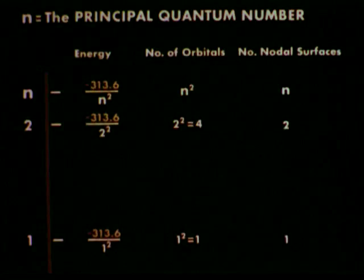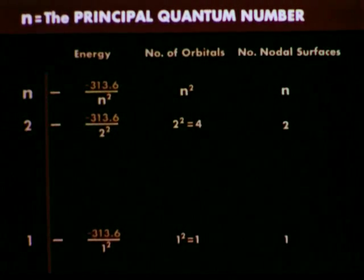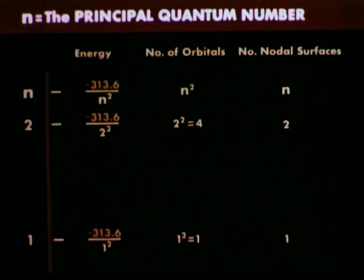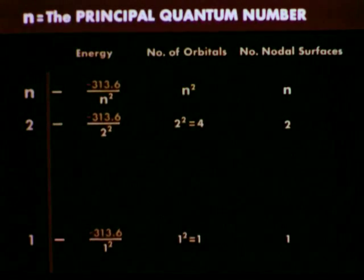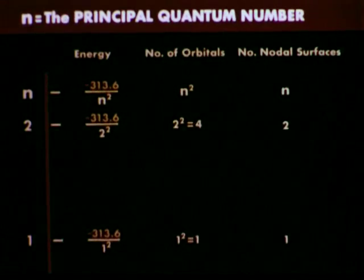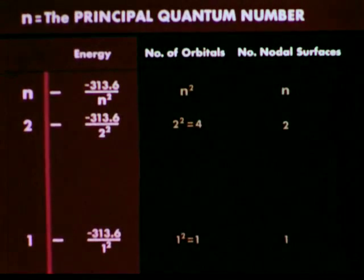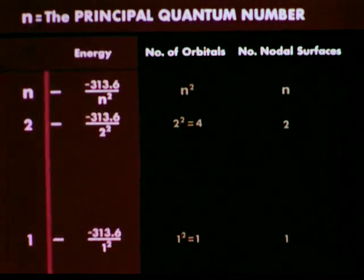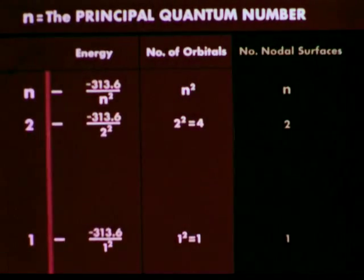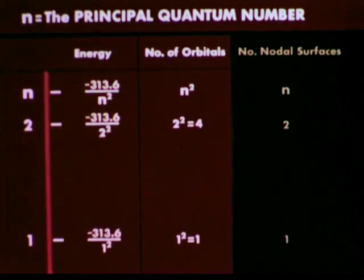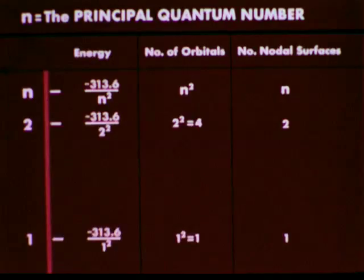We see then that the quantum number n, called the principal quantum number, gives a great deal of information about the hydrogen atom. It indicates the possible energy states and their corresponding energy values of the hydrogen atom. For each energy state, there are n-squared orbitals, and each orbital has n nodal surfaces.